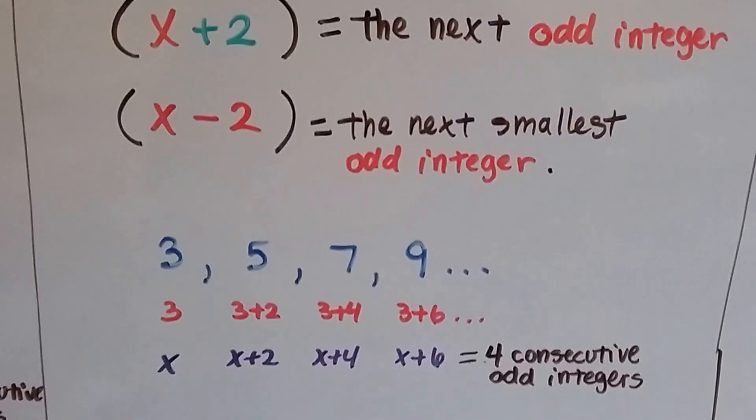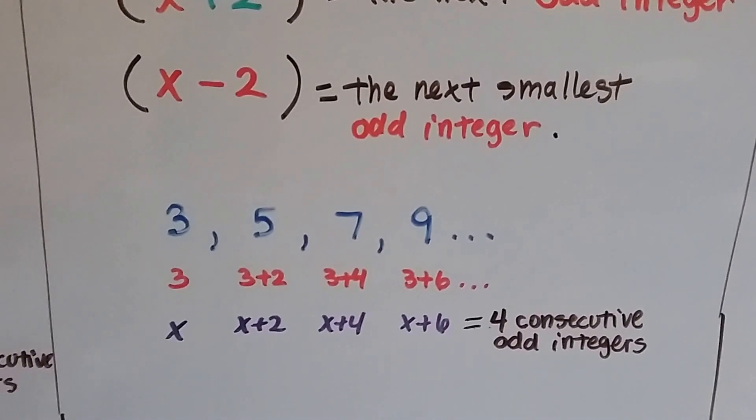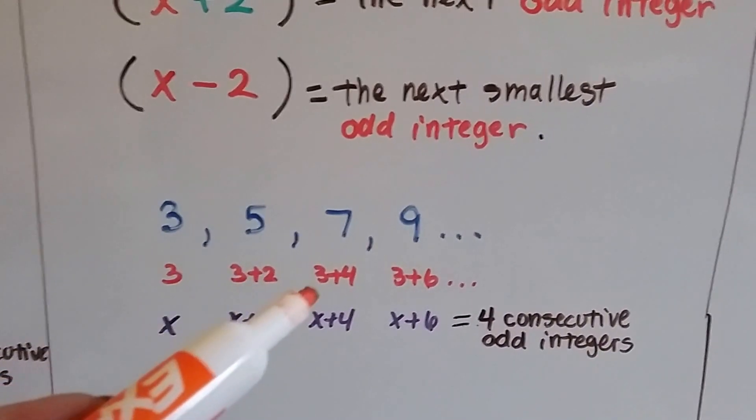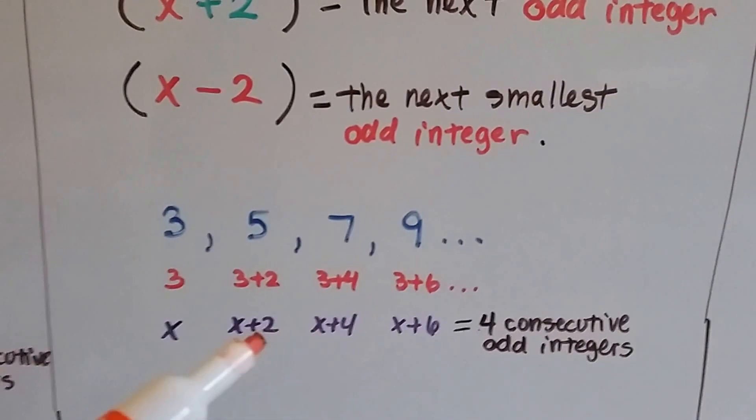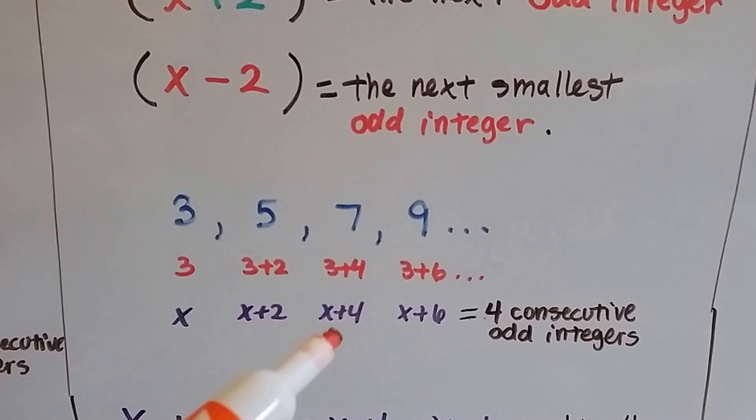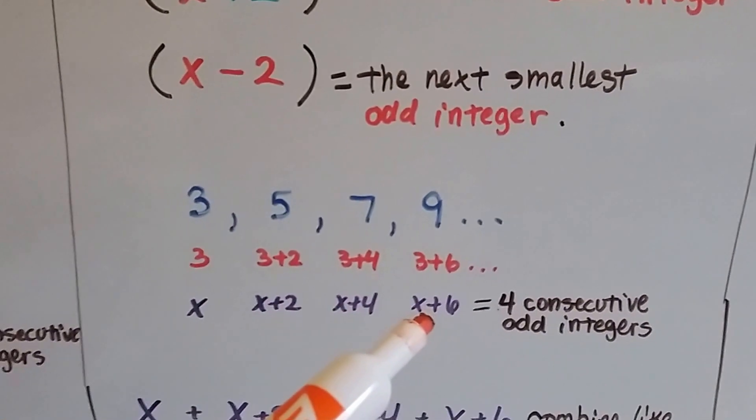We have 3, 5, 7, and 9, those are consecutive odd integers. And we have 3, then 3 plus 2, then 3 plus 4, then 3 plus 6, and that's going to get us the 5, the 7, and the 9. We can do x, x plus 2, x plus 4, x plus 6, and that's 4 consecutive odd integers.